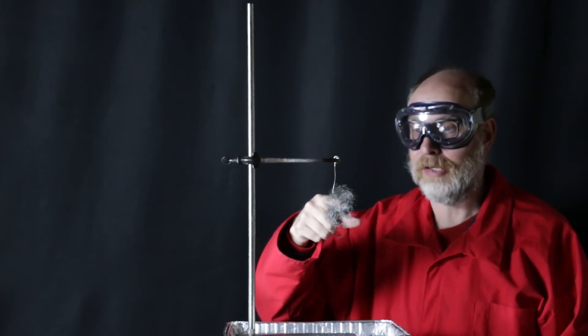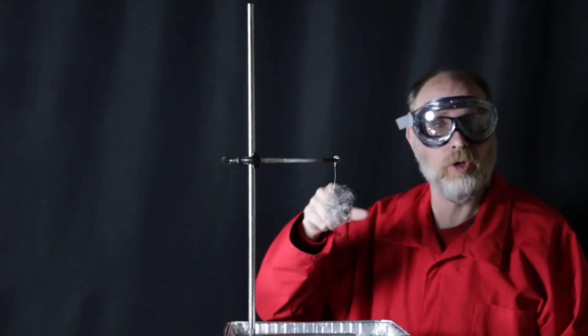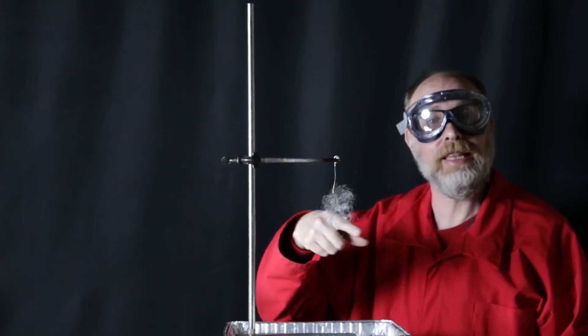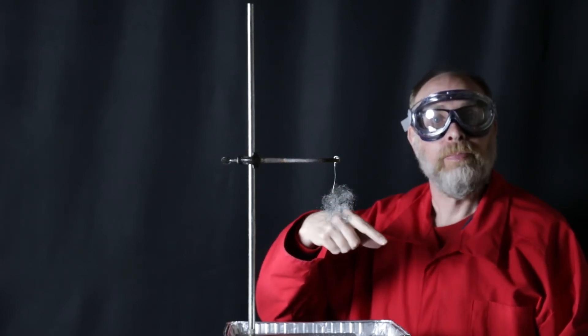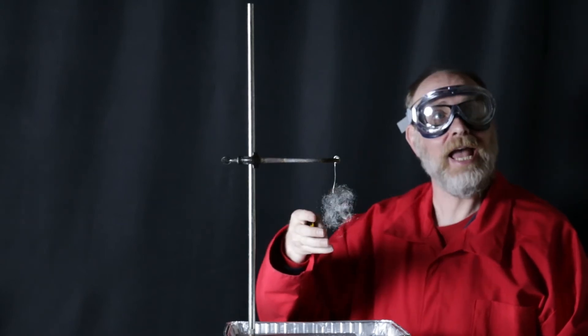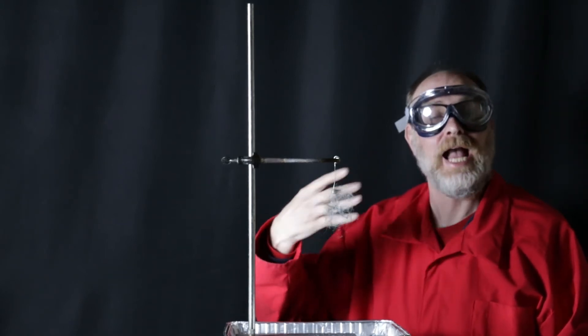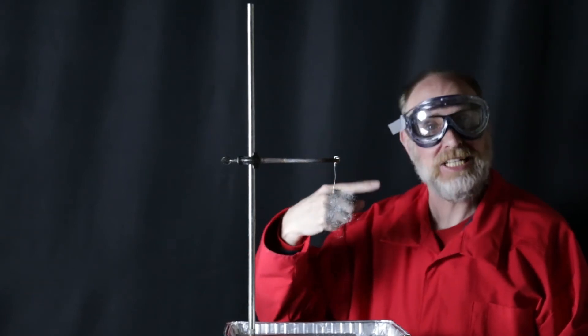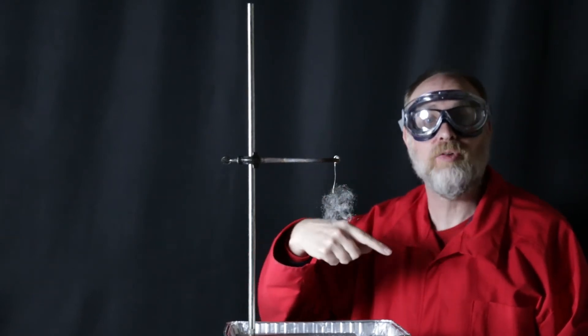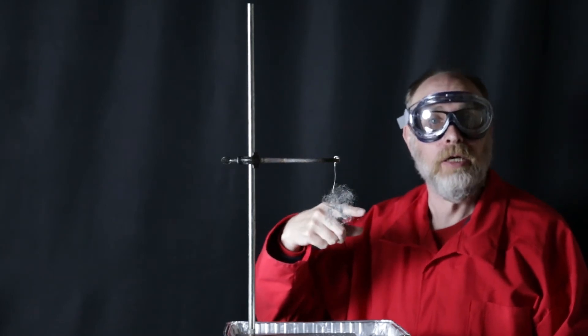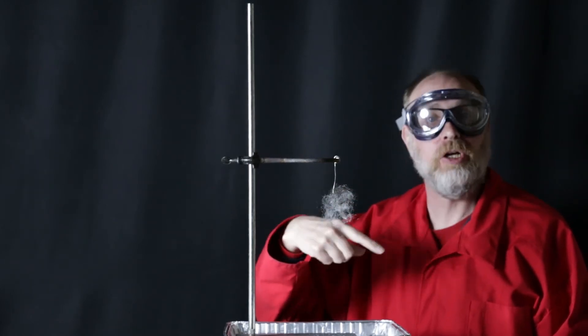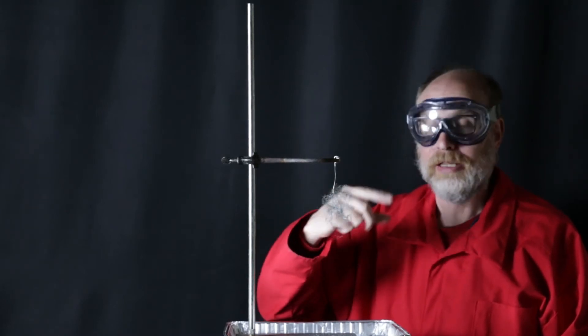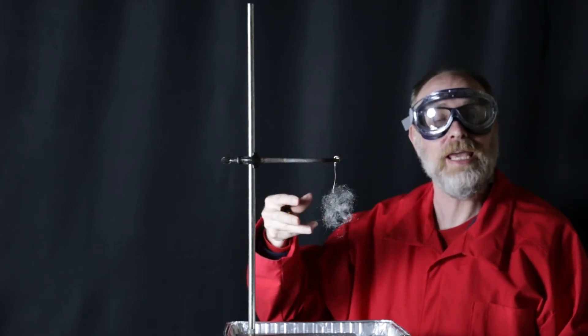Once that happens, the reaction will start to occur because the temperature is so high. So we're going to start to oxidize the iron in that wire. Now, the funny thing is, we're going to add energy to this reaction to get it to start going, that activation energy that we're going to provide. And then the reaction itself is going to produce energy because it's what we're going to call an exothermic reaction.